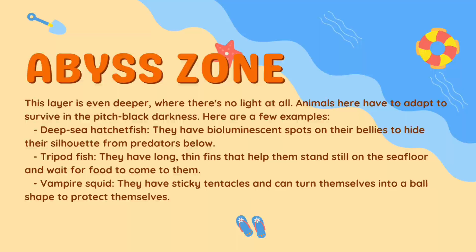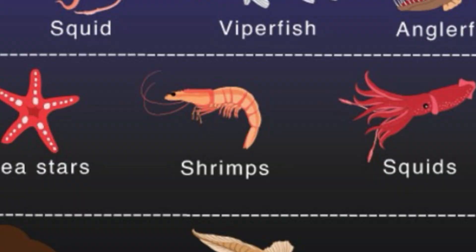Next we have the abyss zone — even deeper, with no light at all. Animals here have to adapt to survive in pitch black darkness. The deep sea hatchet fish has a bioluminescent spot on its belly to hide its silhouette from predators below. The tripod fish has long thin fins that help it stand still on the sea floor and wait for food. The vampire squid has sticky tentacles and can turn itself into a ball shape to protect itself.